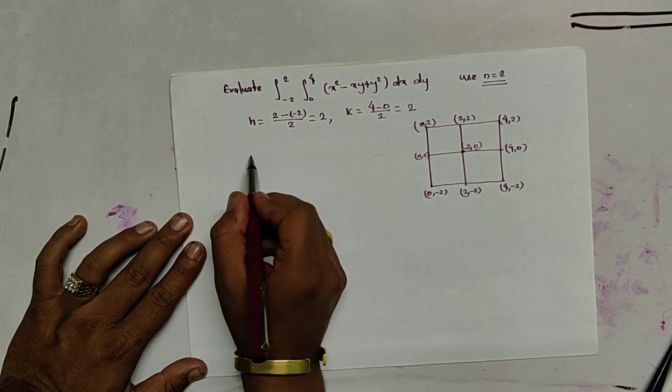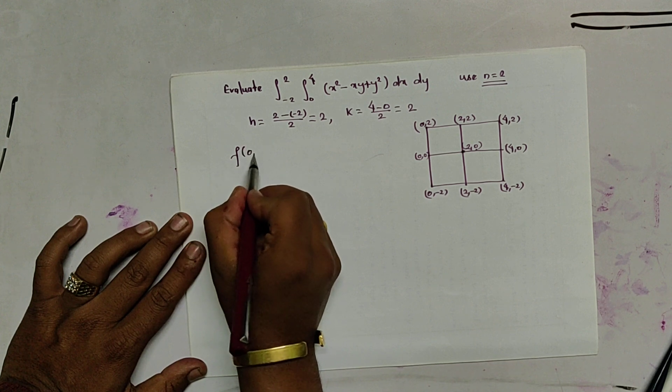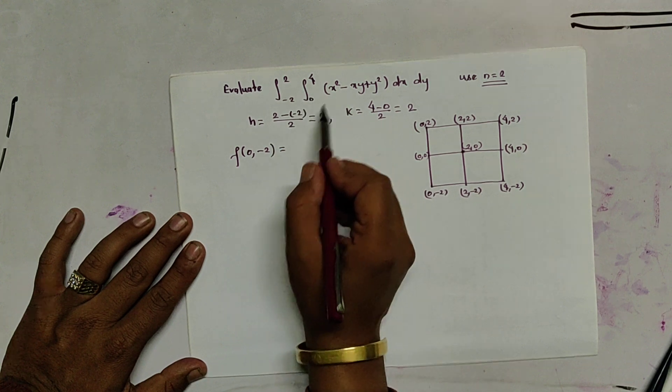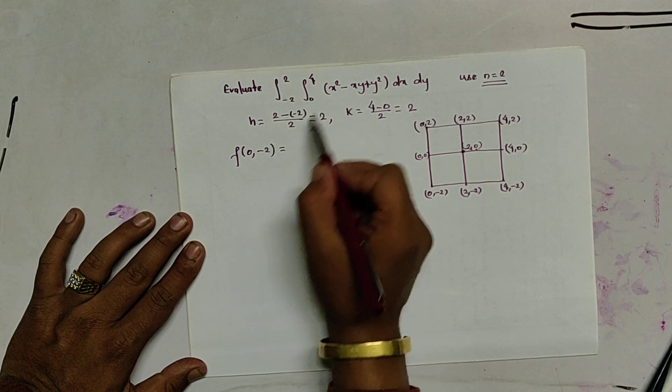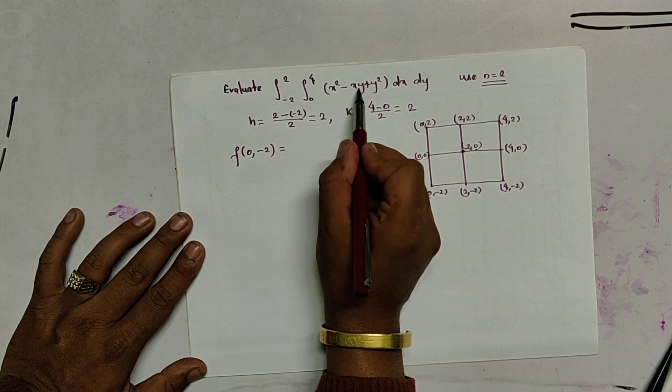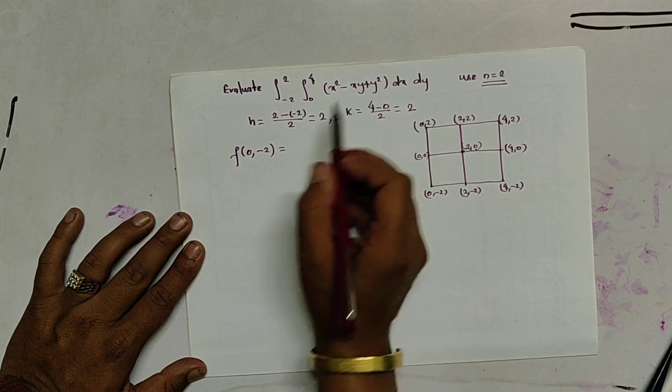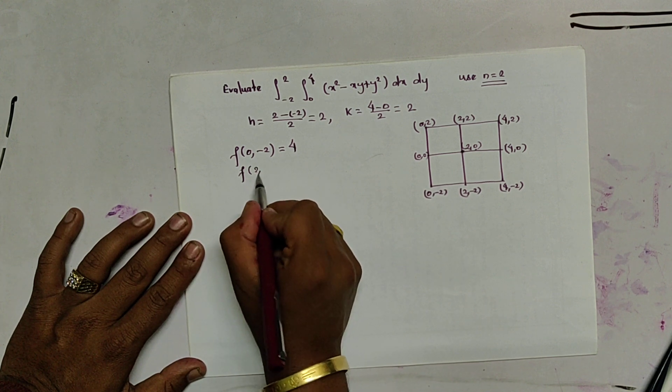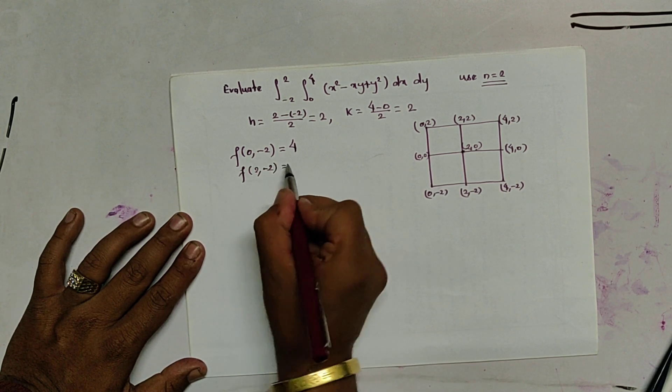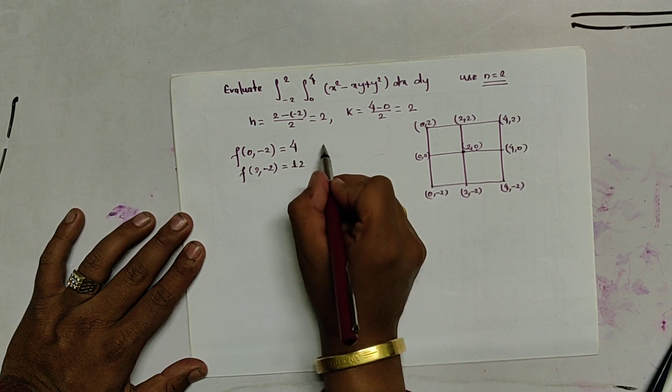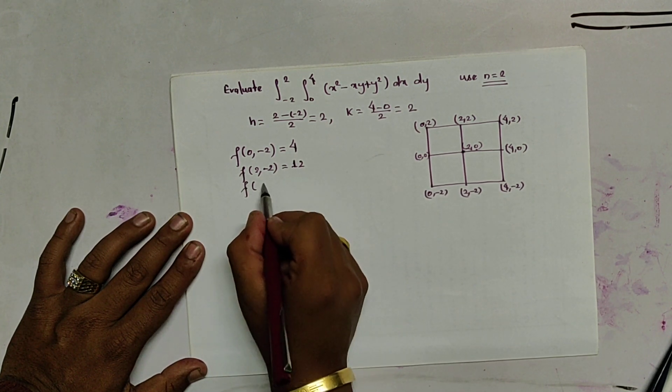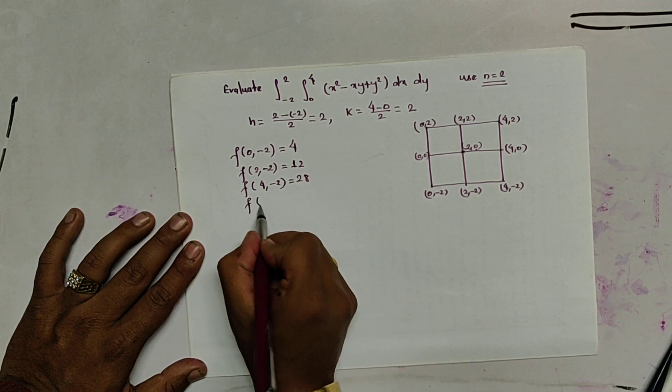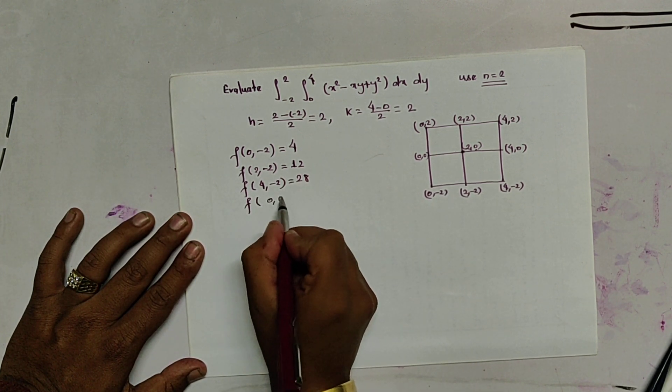So we use trapezoidal rule. First we have to calculate f 0, 0, 0, 2 is equal to what is the value at 0, minus 2, 0 squared minus 0 and minus 2 squared is 4. Similarly, we calculate for 2 minus 2 it gives 2. f 4 minus 2 it gives 28.